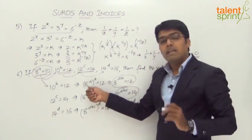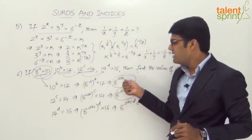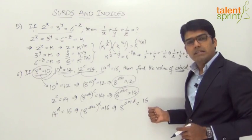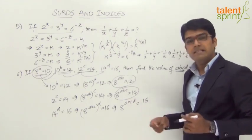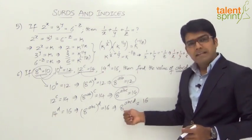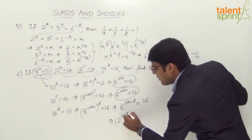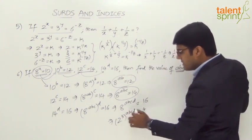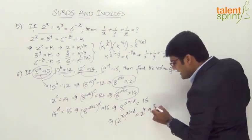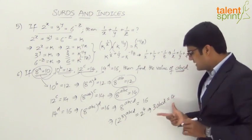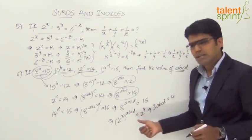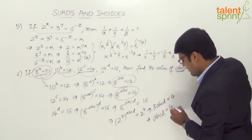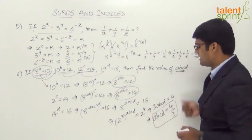We apply the rule (a^m)^n = a^(mn) at each step. Now 8^(abcd) = 16, and since the bases are not equal, we write both in terms of 2: 8 = 2^3, so (2^3)^(abcd) = 2^4, which gives 2^(3abcd) = 2^4. Equating powers: 3abcd = 4, so abcd = 4/3. That's your answer.